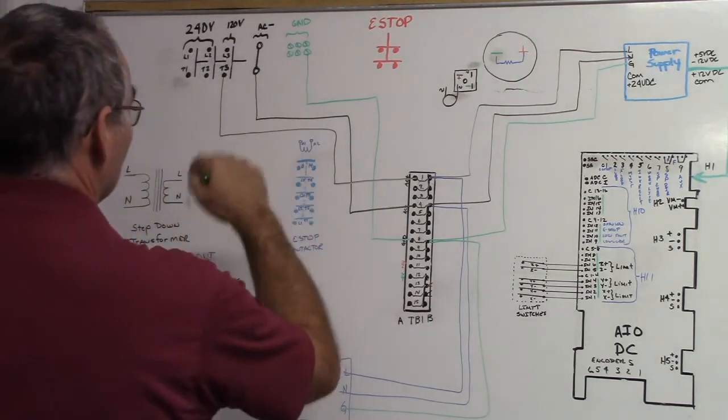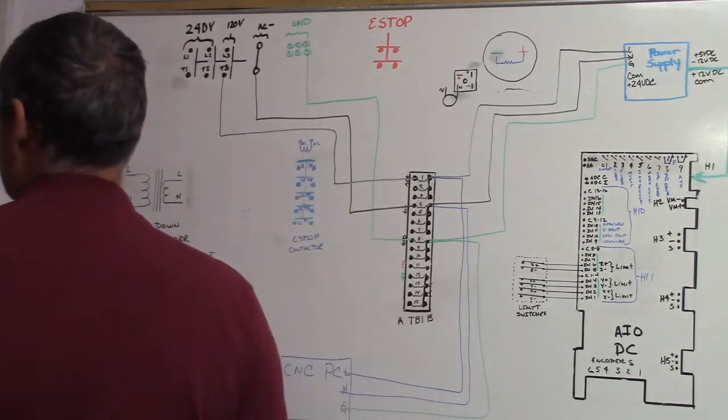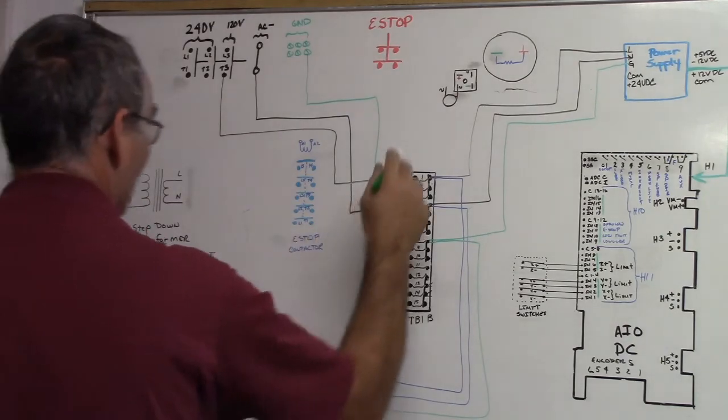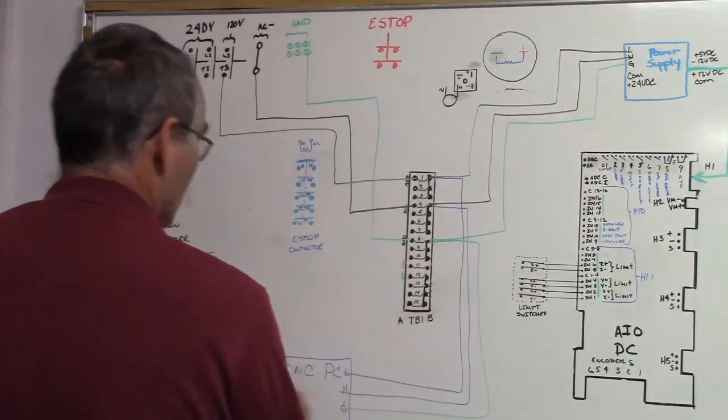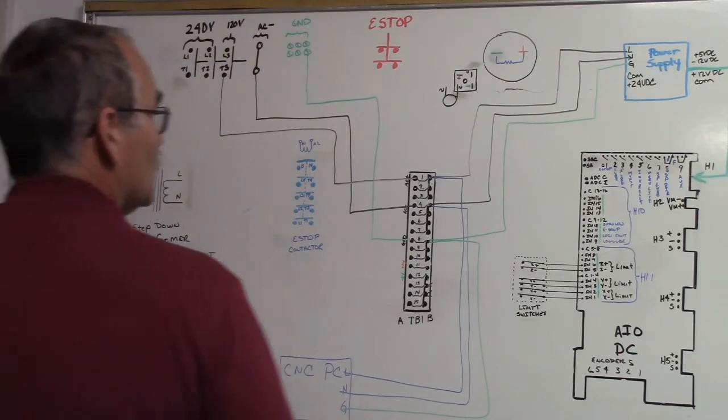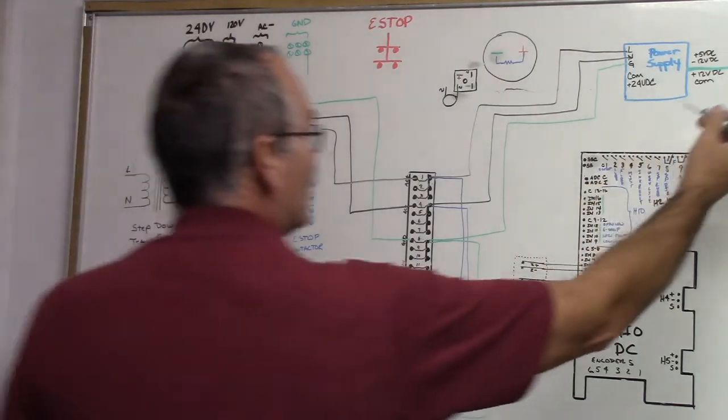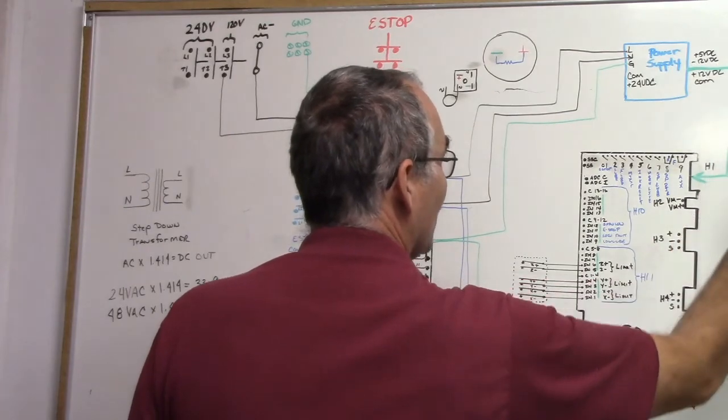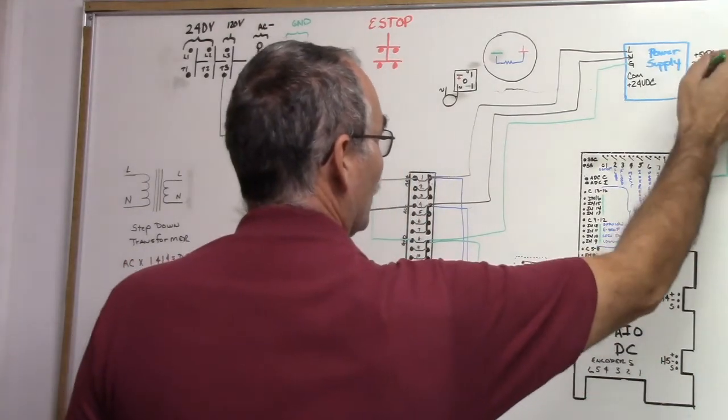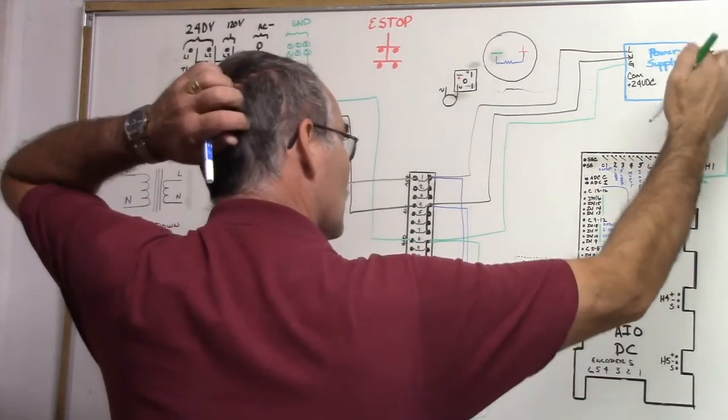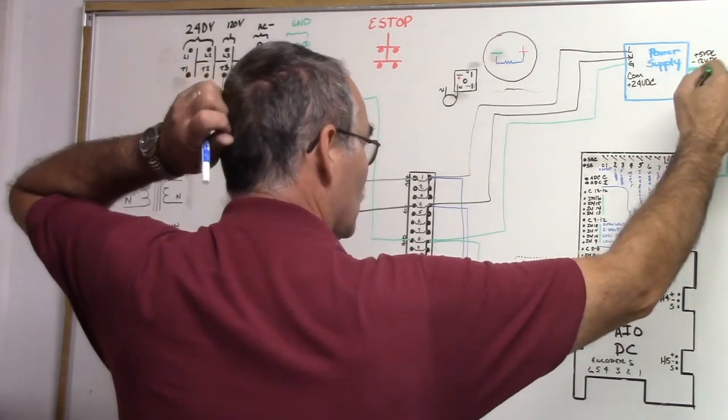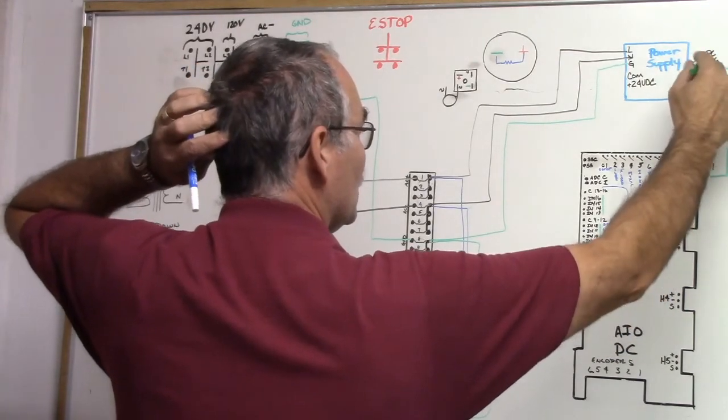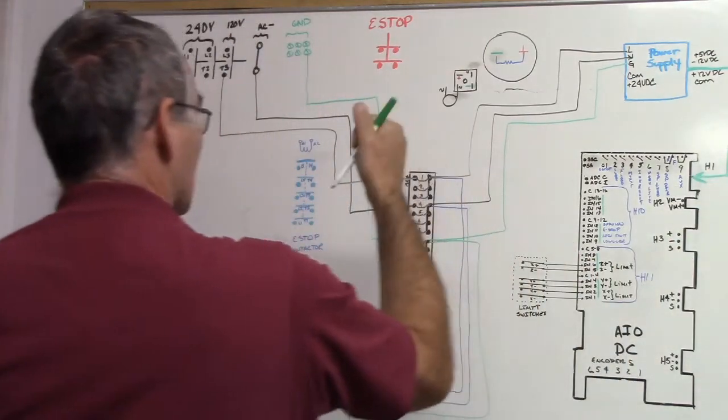So now we've got power. When we flip this circuit on, we've got power to our power supply, we got power to our CNC PC. And then there is a pigtail off of this that comes down and plugs right into - this power supply has a pigtail that comes with it. You'll wire it per instructions, it's color coded, and then you'll plug it into the all-in-1 DC.